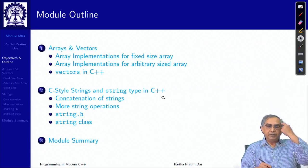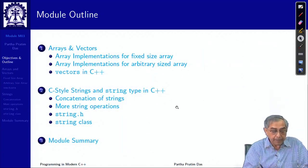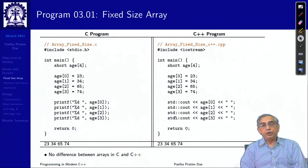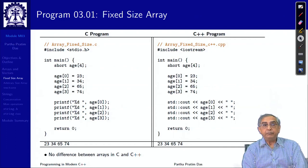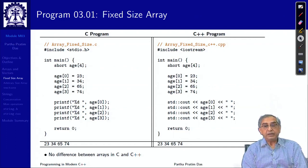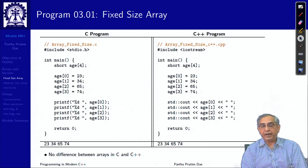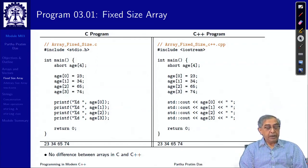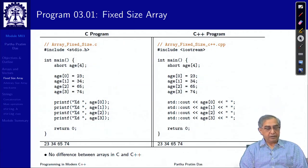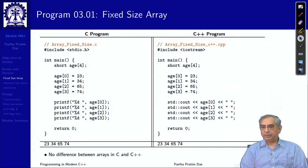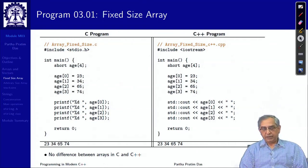This is the outline which will be there on the left always. Let us talk about arrays and vectors. Here is a program which defines an array of length 4, of type short, assigns values to different array locations and prints them. This program written in C++ remains the same. There is no difference of using fixed size array between C and C++.